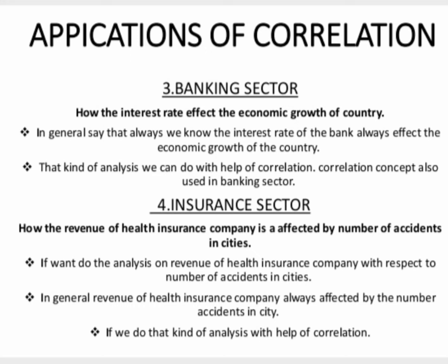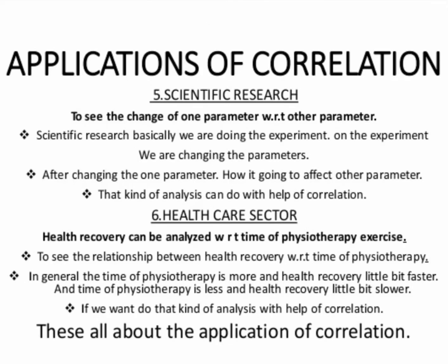The fourth one is the insurance sector. Insurance sector means how the revenue of a health insurance company is affected by the number of accidents in a city. In general, the revenue of a health insurance company is always affected by the number of accidents in a city, and that kind of analysis can be done with the help of correlation.